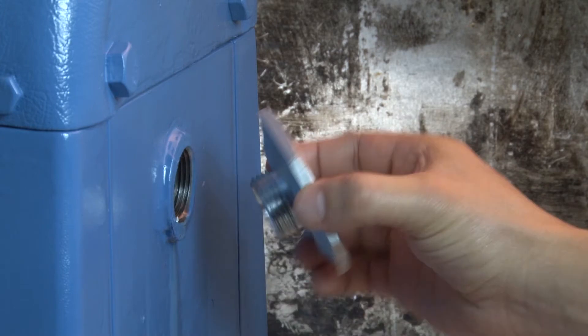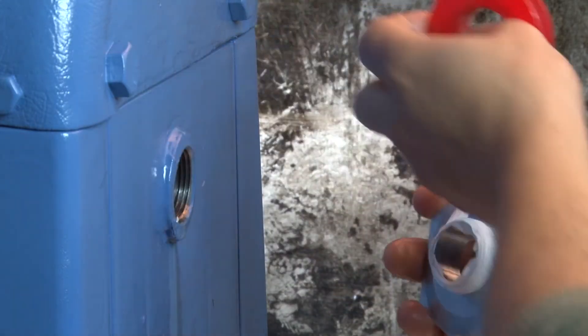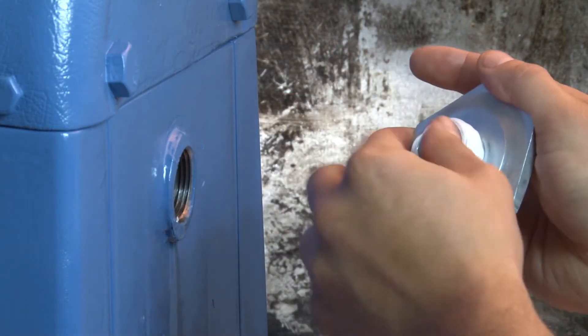Tightly thread the reducer into the machine's porthole using a 2 and 3/4 inch wrench and enough pipe thread sealing tape to prevent leakage.